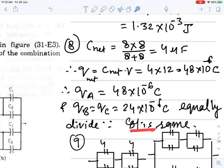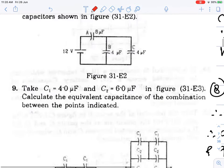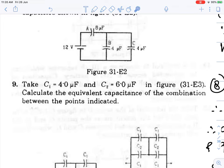The charge will be divided equally, 48 to 24, because the capacitances are the same. When C is the same, charge divides equally. Next question.